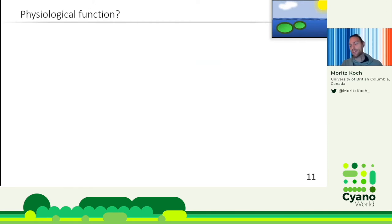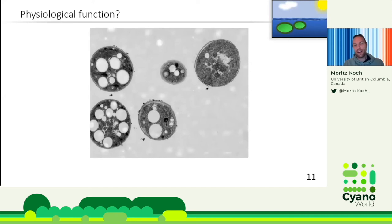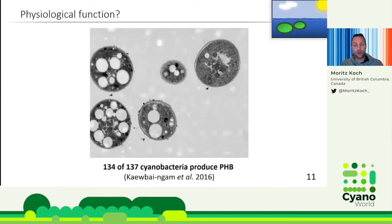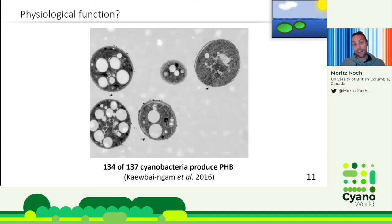The physiological function of PHB still remains an open question. But looking at what a large fraction of the cell is composed of PHB, and that cells have developed a sophisticated mechanism to differentiate between high and low producers, there should be a physiological reason. A recent study showed that 134 out of 137 different cyanobacterial strains were capable of producing PHB — if there were no evolutionary advantage, cells would have given up on it long ago.